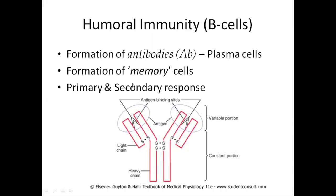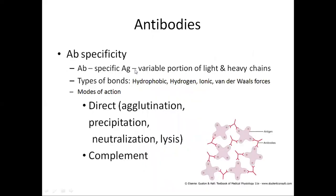Here is shown the structure of the IgG antibody. It consists of two heavy chains and two light chains. These heavy and light chains are linked together by disulfide linkages, and these are the antigen binding sites. It consists of two portions: the variable portion and the constant portion. Each antibody has a specific nature to bind with a specific type of antigen. The variable portion of the light and heavy chains has the ability to bind with antigen.